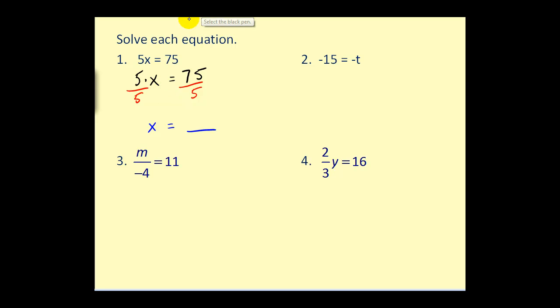So when we simplify this we will have 5 over 5 is 1. 1 times x is x. And 75 divided by 5 equals 15. So we have x equals 15.